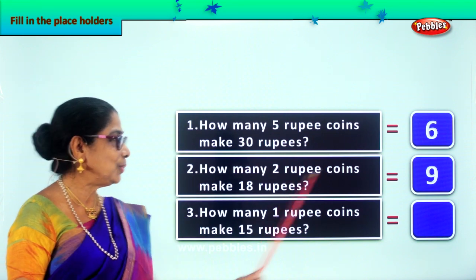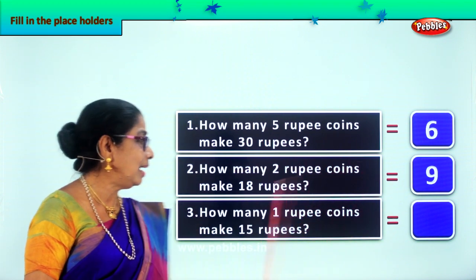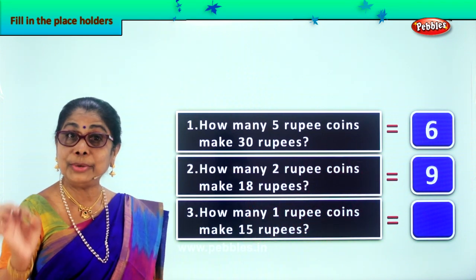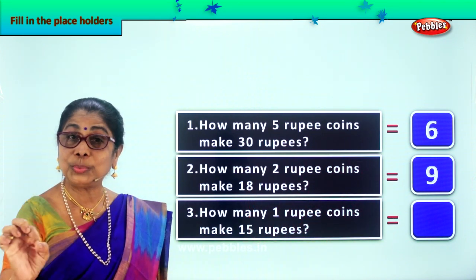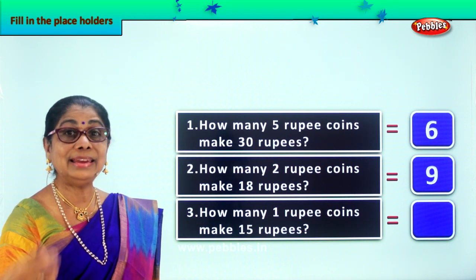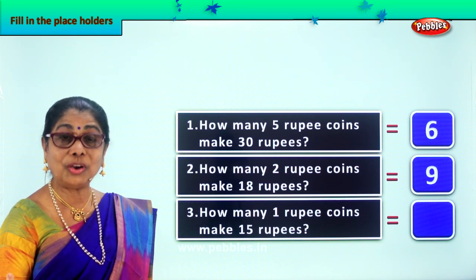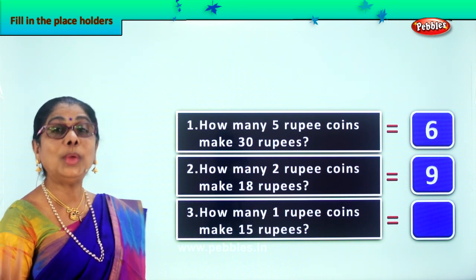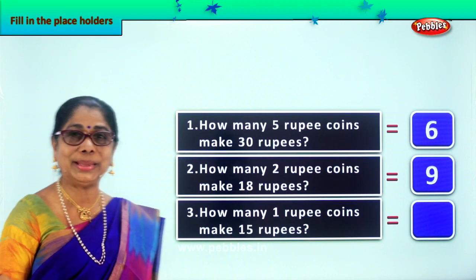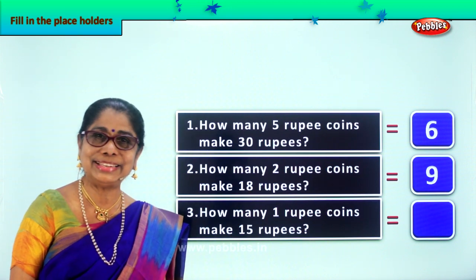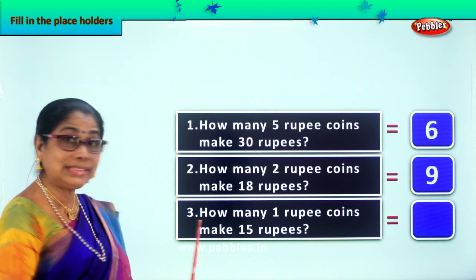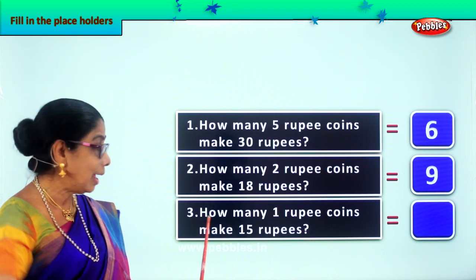2 nines are 18. How many 2-rupee coins do we need? 9. Nine 2-rupee coins will make 18 rupees. Did you enjoy? Yes. Let's take the third one.